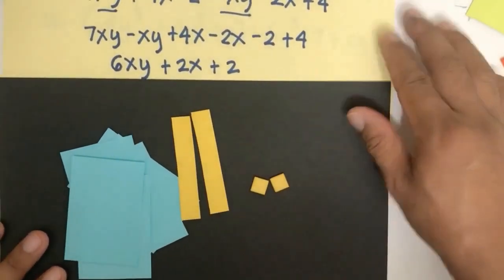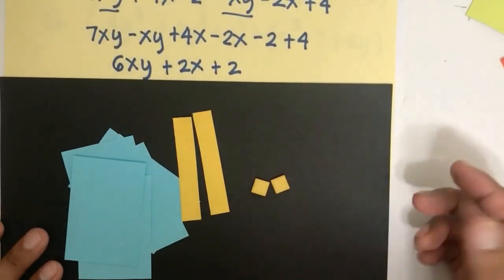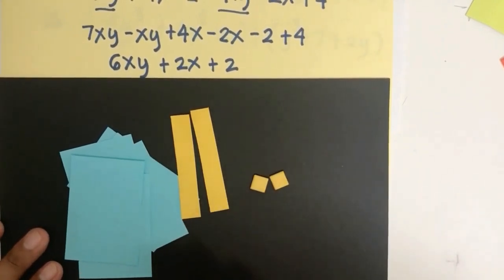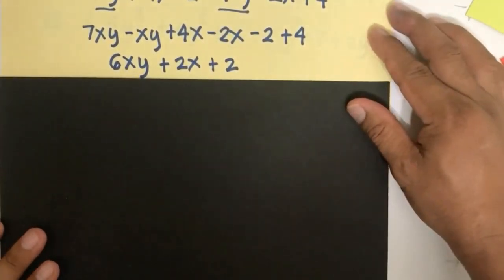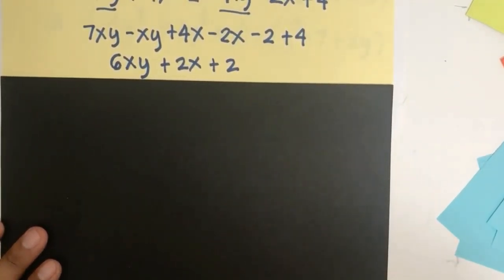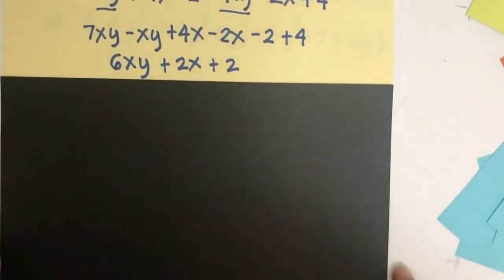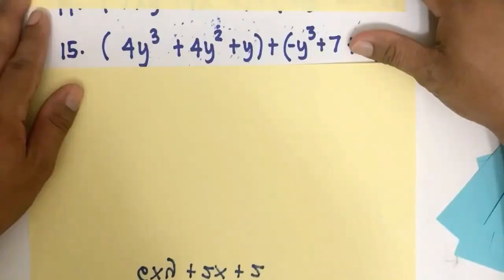Use these manipulatives to deepen your understanding of what's happening when you perform operations with polynomials. Once you understand the process, gradually remove the manipulatives so you can perform operations mentally and abstractly. Use them to understand why you cannot combine x with xy, or x squared with x — because they are different.